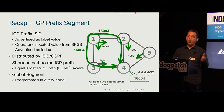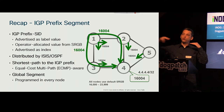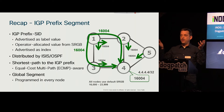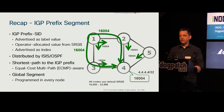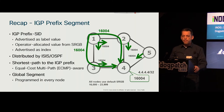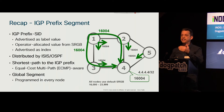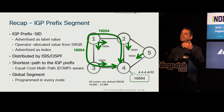Operations people will love this because you have an LSP that stays with the same label swap until the last pop. If you have a controller programming the network, its logic is trivial — just tell any router to push label 16,004 and you have your shortest path to router 4. This most important principle — the label that follows SPF to a destination — is what we call the IGP prefix SID.